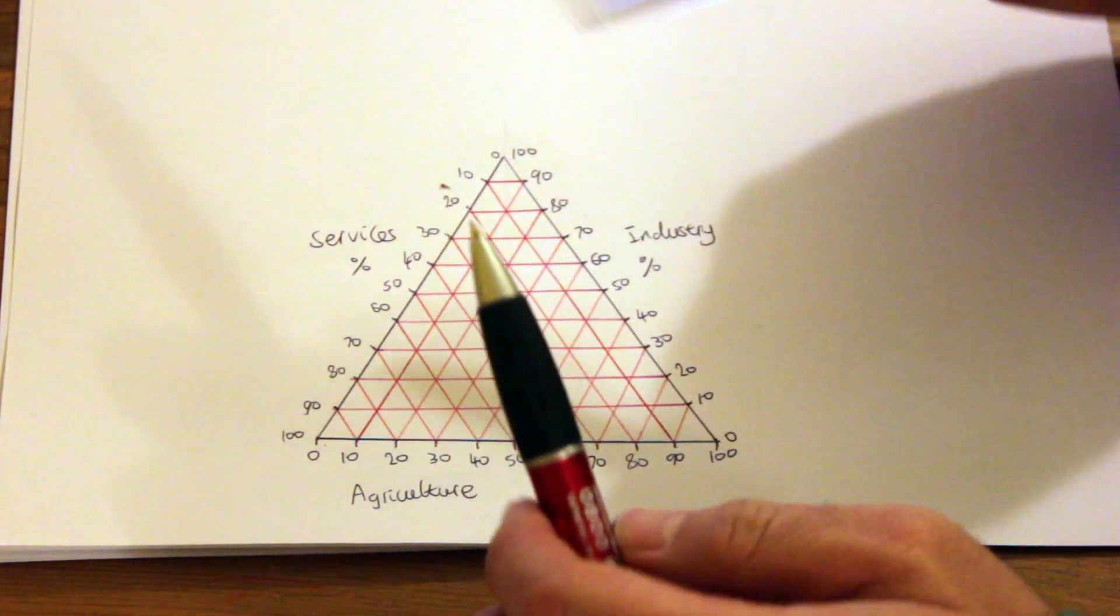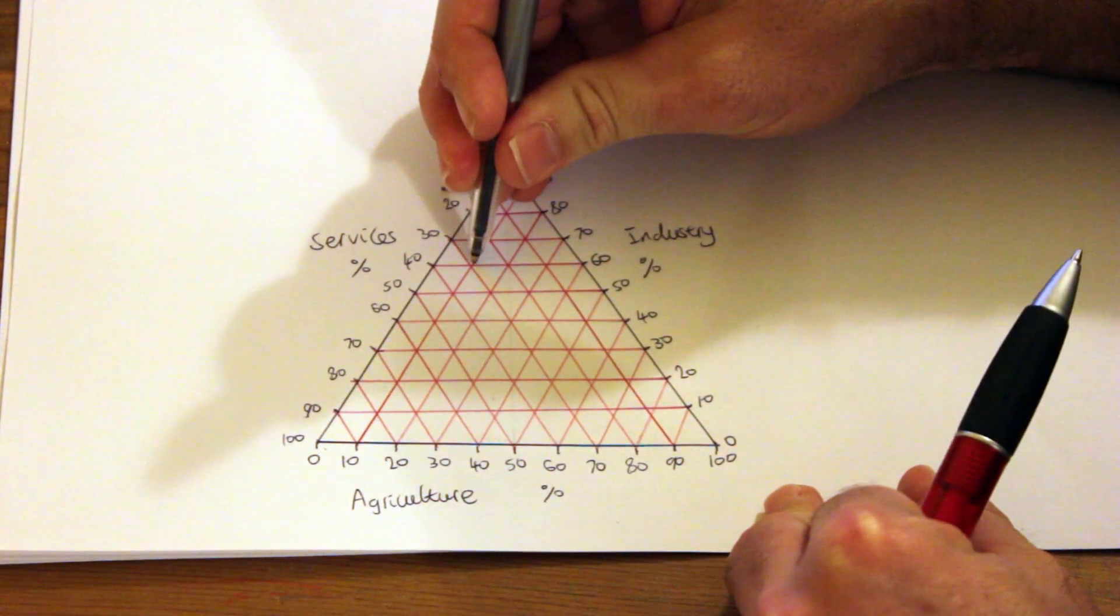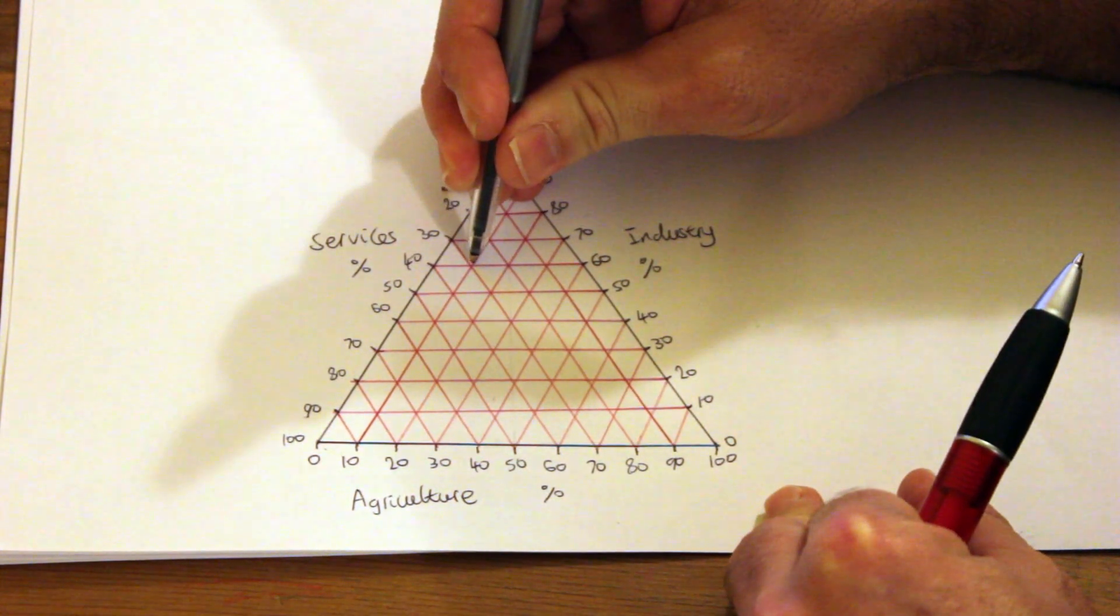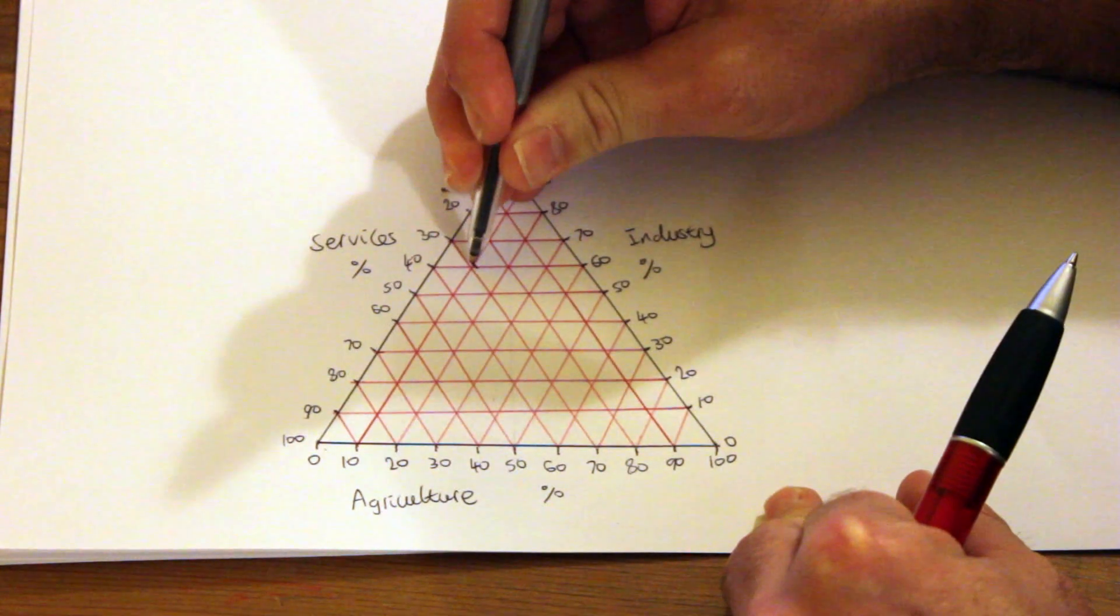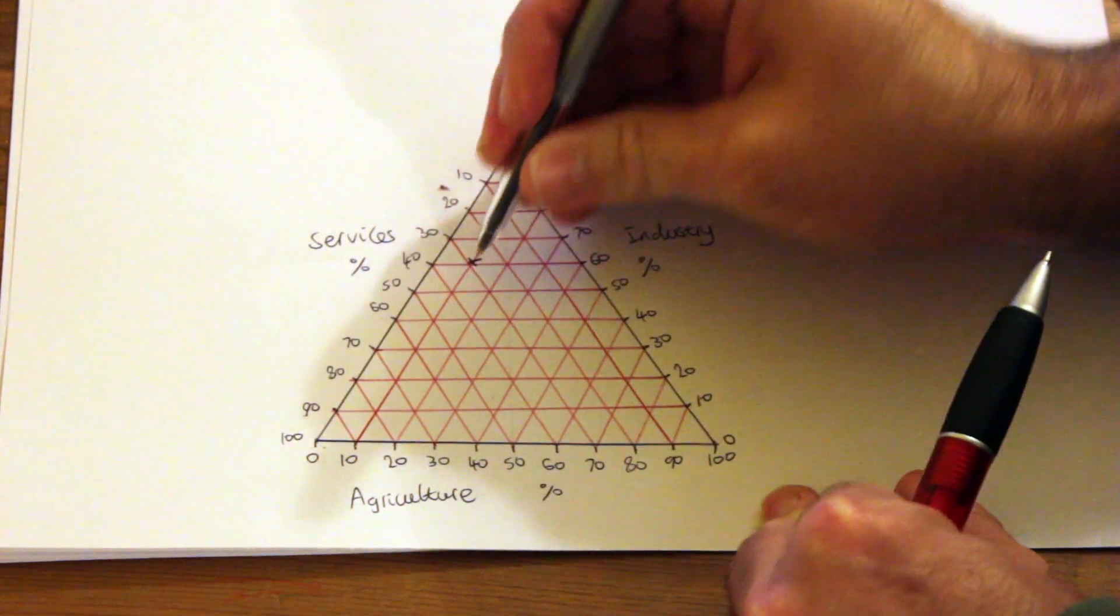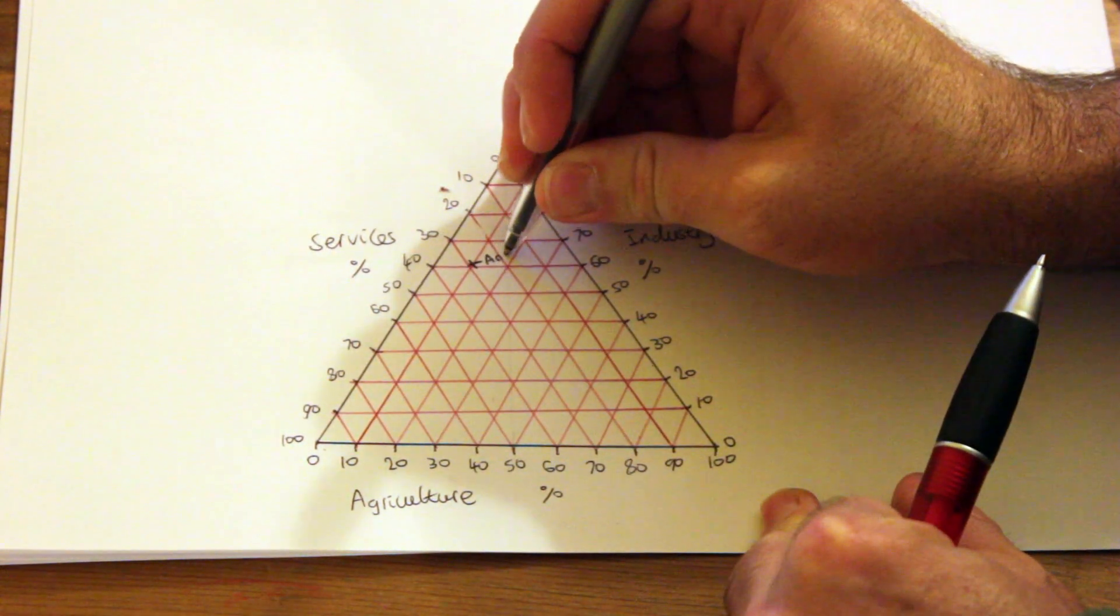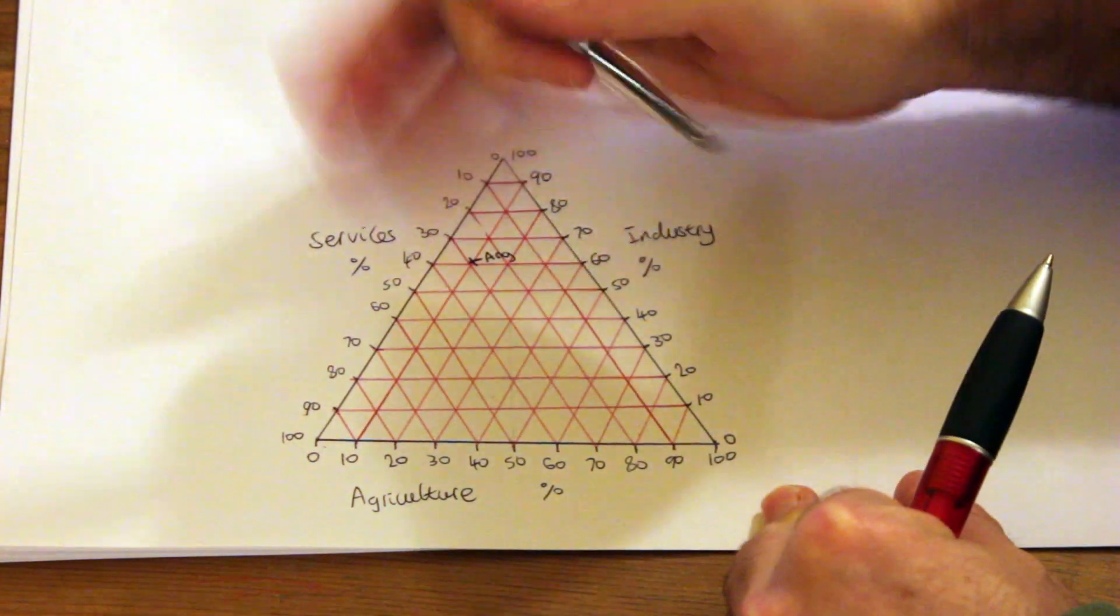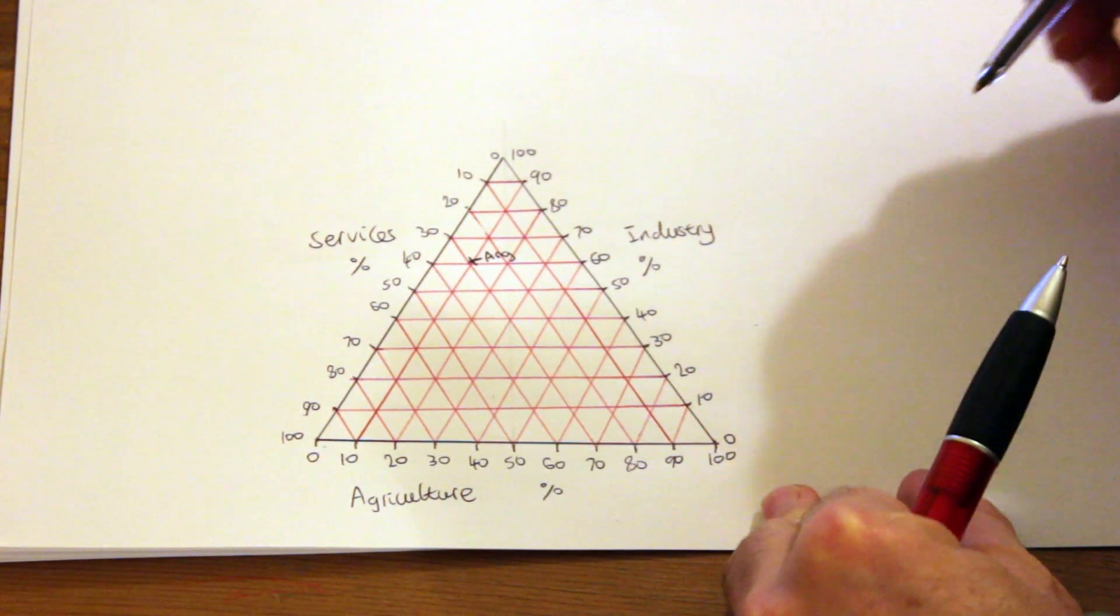So now I'm going to just put a little star, a little cross there, and I will write A-N-G for Angola, which I'll later put in a key.